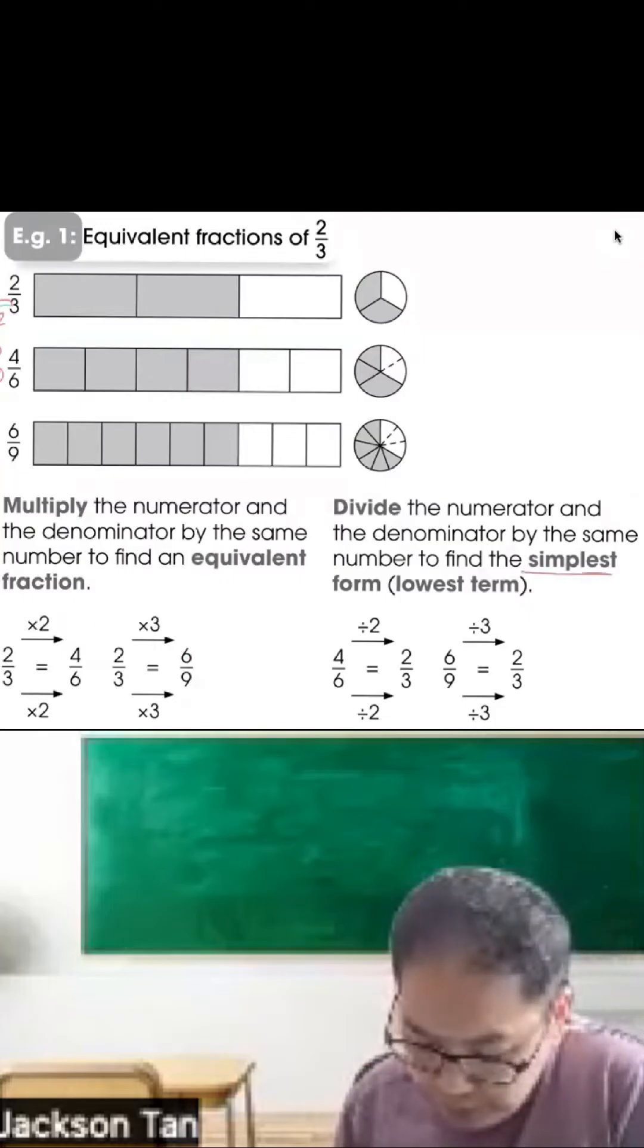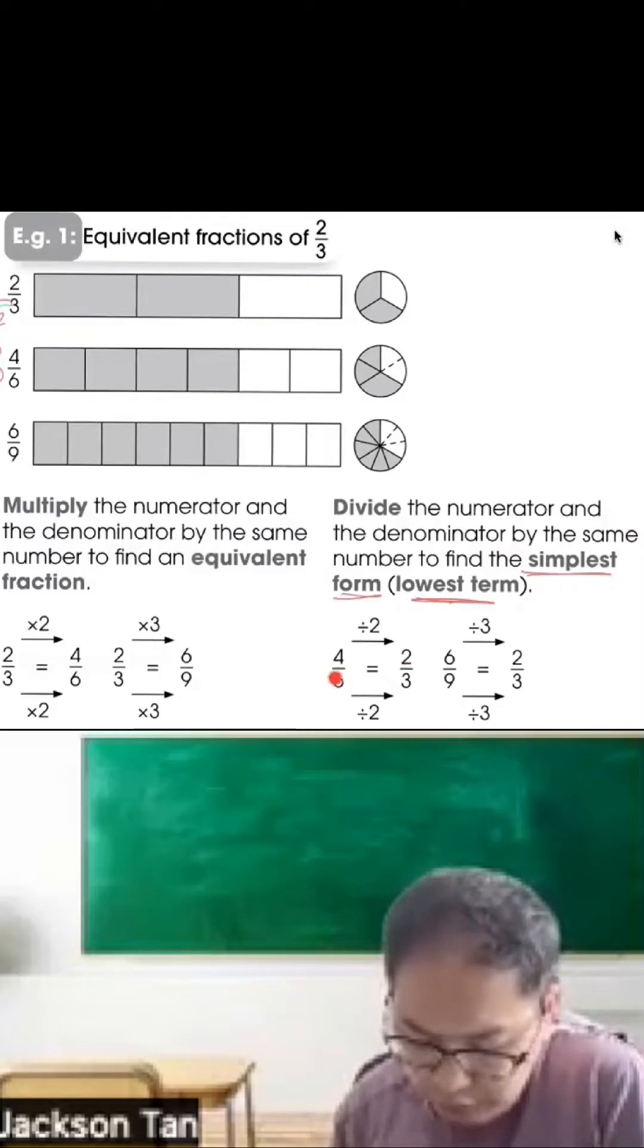If you're asked to change to simplest form, also known as lowest term, we can divide the numerator and denominator by the same number. So like 4 divided by 2 is 2, 6 divided by 2 is 3. Equivalent fraction, and this is the simplest form.